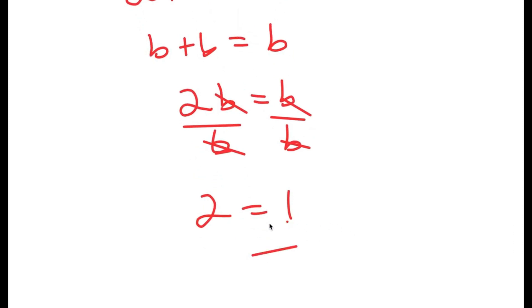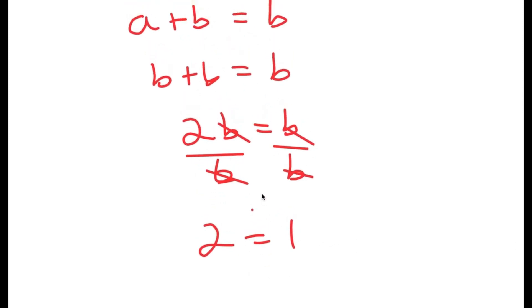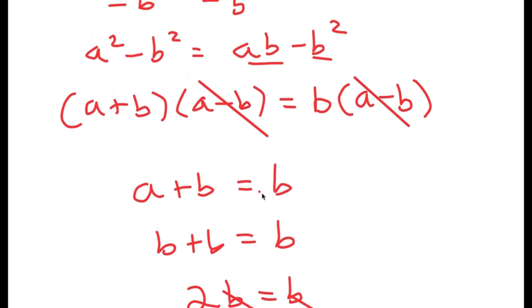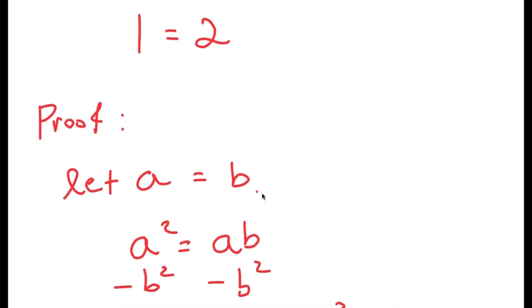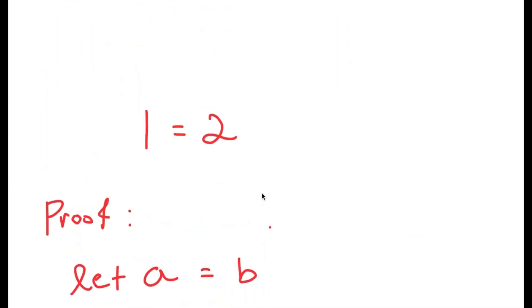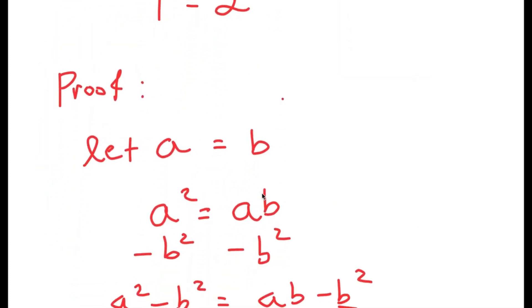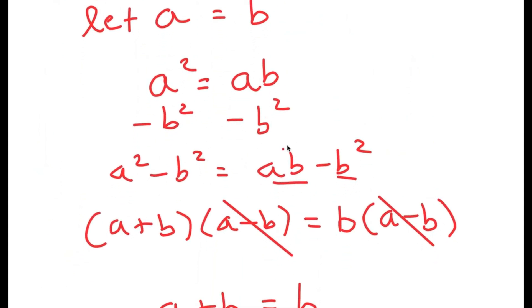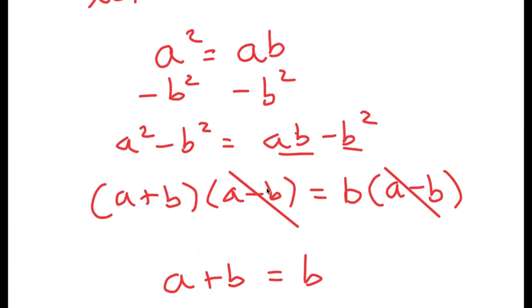So I just proved that 2 is equal to 1. Now there is actually an error in here, and what I want you to do is comment where the error is in the proof.